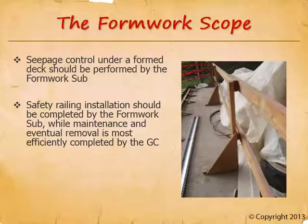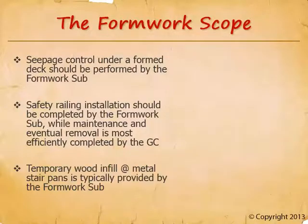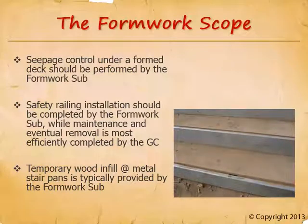Safety rails should be constructed by the formwork subcontractor, but maintenance and eventual removal is most efficiently completed by the general contractor. It's most appropriate for the formwork sub to do them because they will construct the safety rails as they progress along with their work on a daily and even hourly basis. Because these rails will be necessary long after the formwork sub has completed their work, the general contractor should pick up maintenance and eventual removal. It's also a common practice for metal stair pans to be temporarily infilled with wood, so we don't pour the concrete too early and have the finish damaged throughout construction. The formwork bidders are equally qualified and routinely allocated this work — the most important thing, as always, is to be sure it's covered but not double covered.